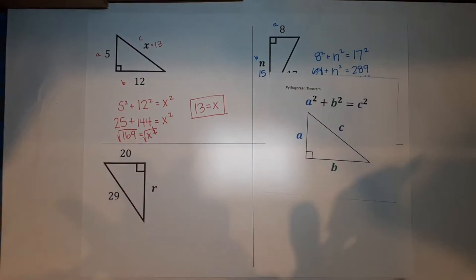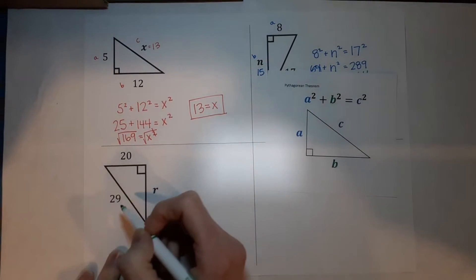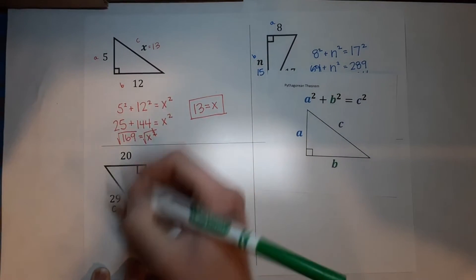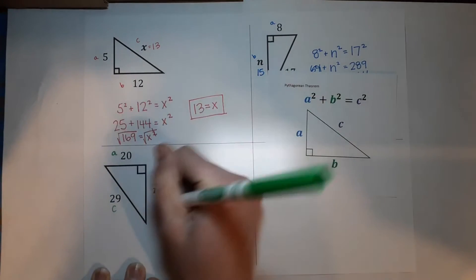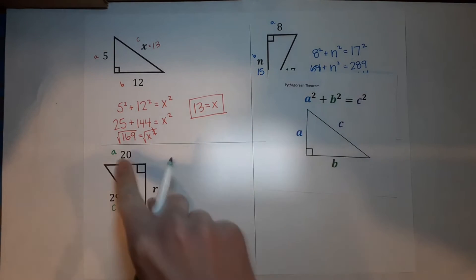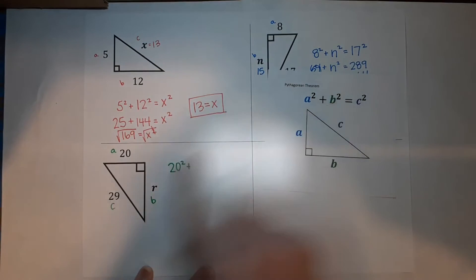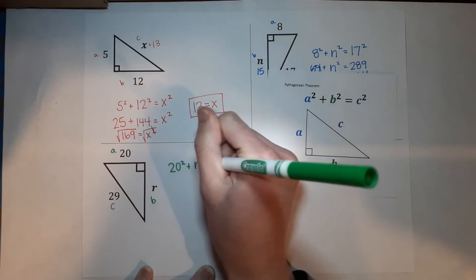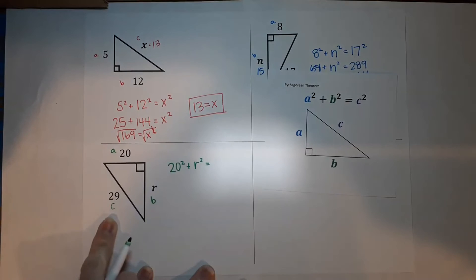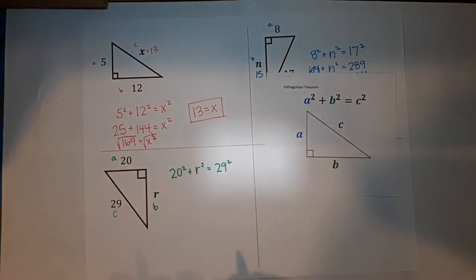Let's do one more. This isn't too bad, right? Hopefully you're like, oh, I can do that. Last one. ABC, this one's C. It's a hypotenuse. The other two, just label them A and B either way. So I've got A squared. So 20 squared plus B squared. B is R. That's one we don't know. So R squared equals C squared. C is 29. So 29 squared.